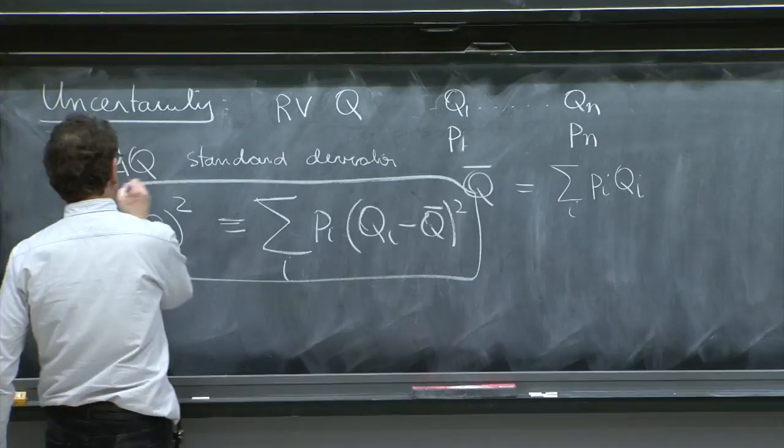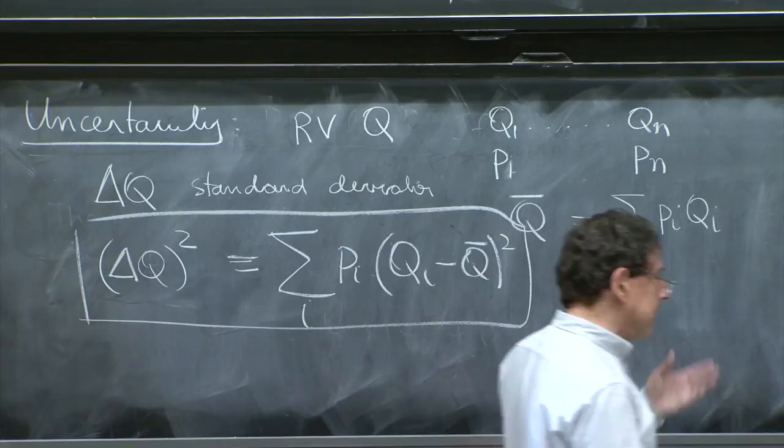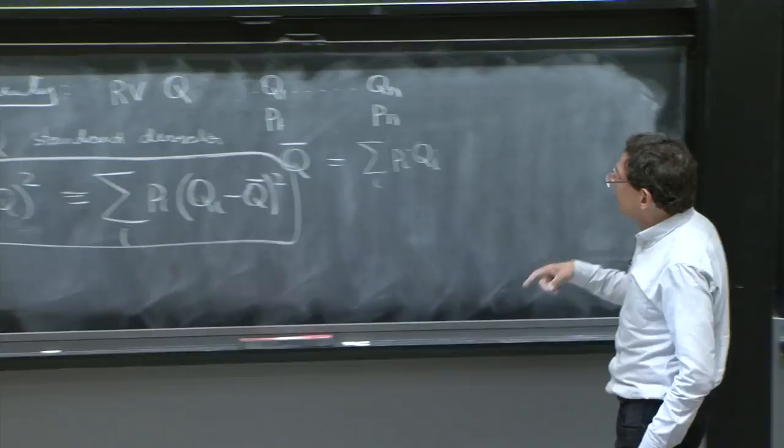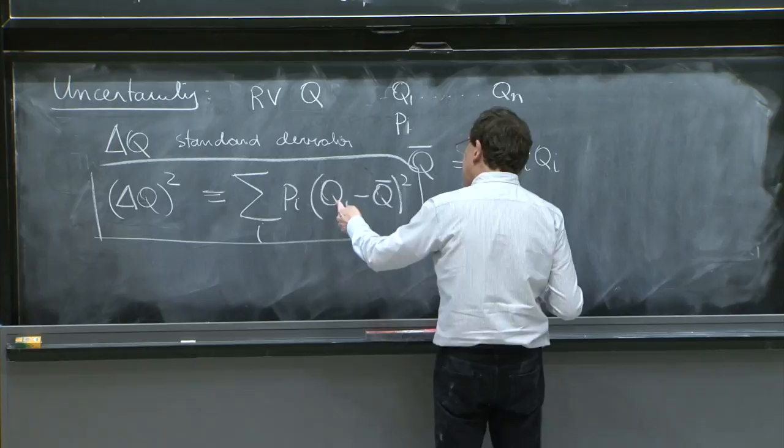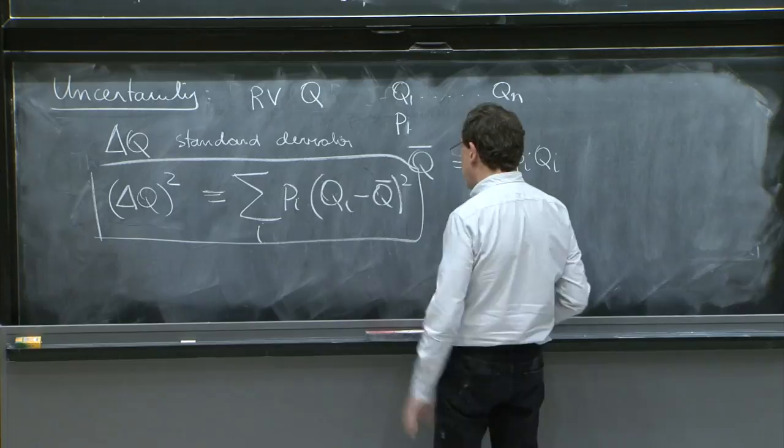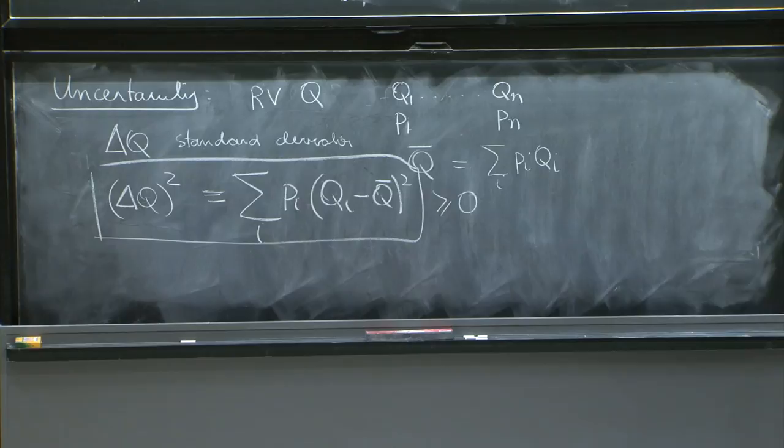Now this is the definition. And it's a very nice definition because it makes a few things clear. For example, the left-hand side is delta q squared, which means it's a positive number. The number on the right-hand side is also a positive number because you have probabilities times differences of quantities squared. So this is all greater than or equal to 0.